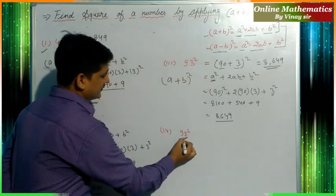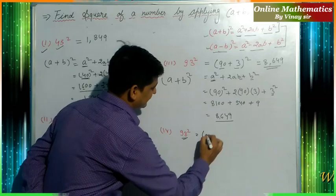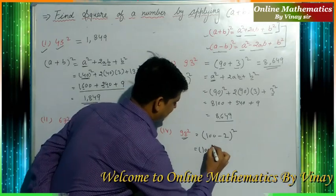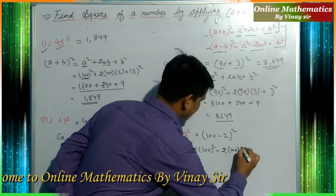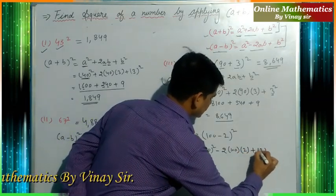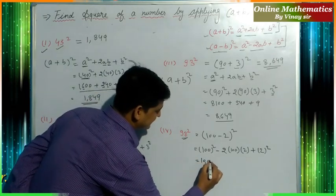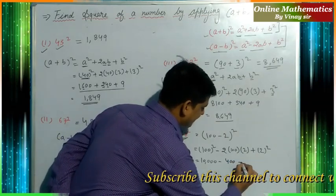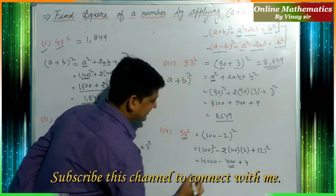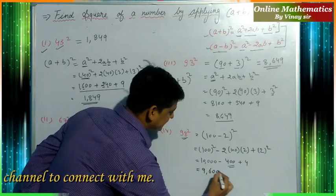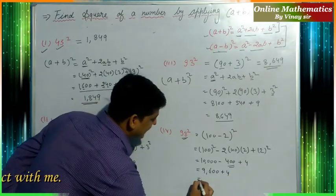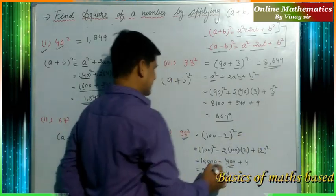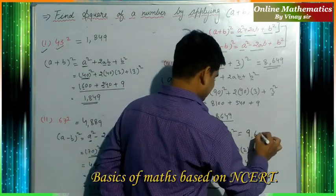The next number is 98². This can be written as (100-2)². Applying (a-b)², we get 100² - 2×100×2 + 2², which gives 10000 - 400 + 4. Subtracting 400 from 10000 gives 9600, then adding 4 gives 9604. So 98² = 9604.